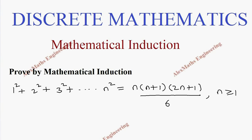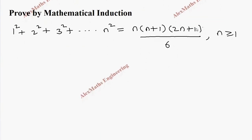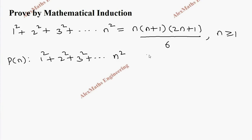Hi students, this is Alex. In this video we are going to prove by mathematical induction that 1² + 2² + 3² + ... + n² equals n(n+1)(2n+1) divided by 6, where n is a positive integer greater than or equal to 1. Let's name this entire expression as P(n). It has two sides: the left hand side is 1² + 2² + 3² + ... + n², and the right hand side is n(n+1)(2n+1) divided by 6.